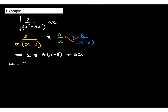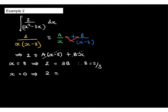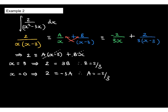Choose values of x carefully. If x equals 3, the left-hand side is 2, this term becomes 0, and we're left with 3B, so B equals 2 thirds. If x equals 0, the left-hand side is still 2, but this part becomes 0, leaving negative 3A, so A equals negative 2 thirds. Going back, I don't want fractional numerators — I want to bring the fraction into the denominator. So A equals negative 2 thirds gives negative 2 over 3x, and B equals positive 2 thirds gives 2 over 3 bracket x minus 3.